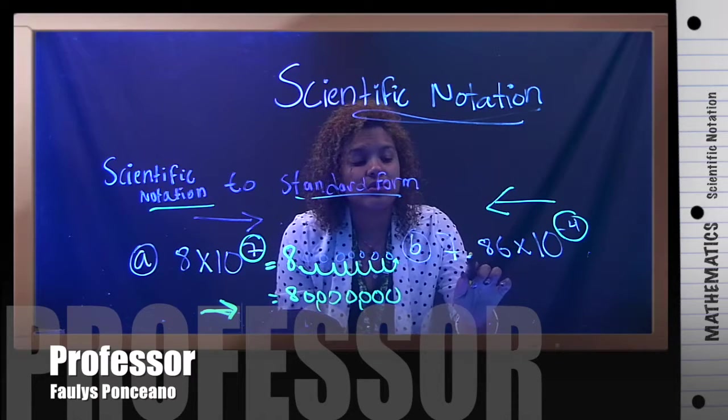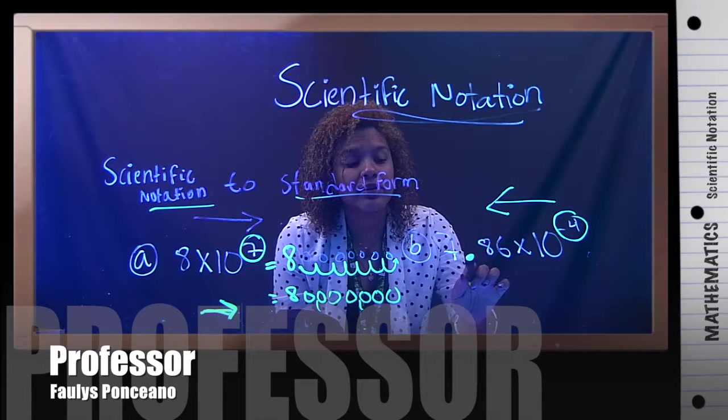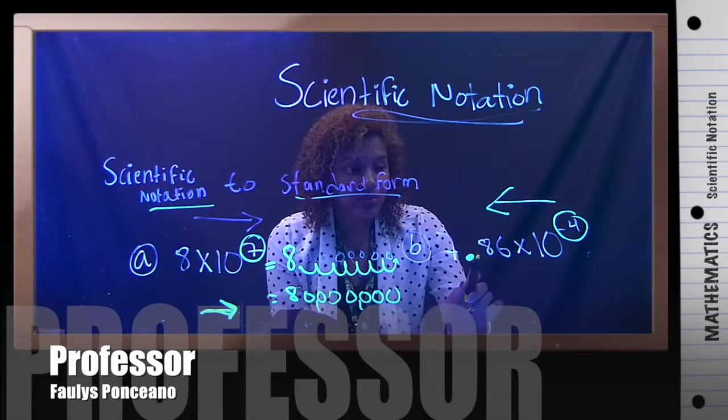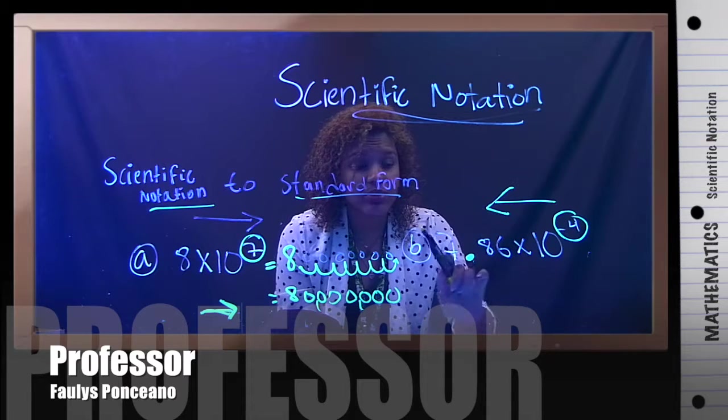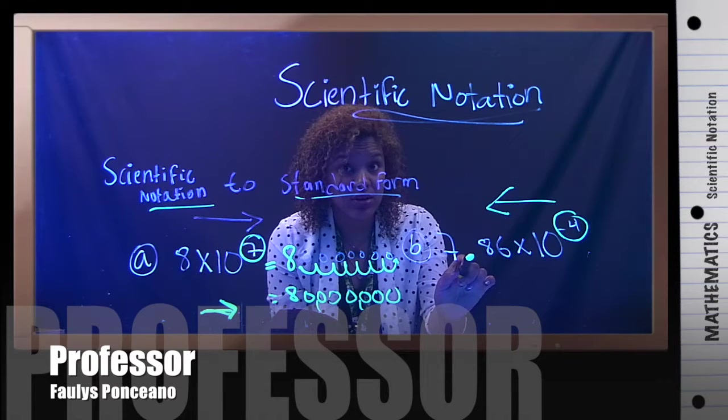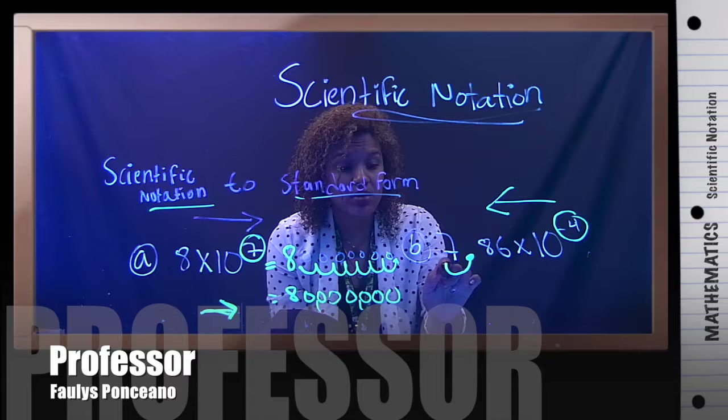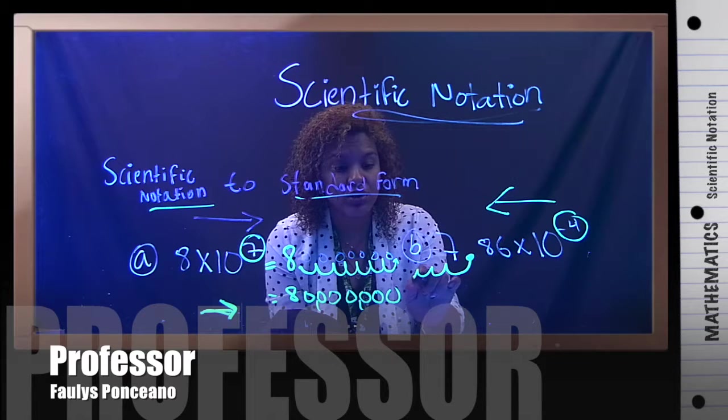If you notice here, you do see the decimal. Right? You see it. So, what does that mean? I'm going to move four times to the left from here. So, I go one, two, three, four.